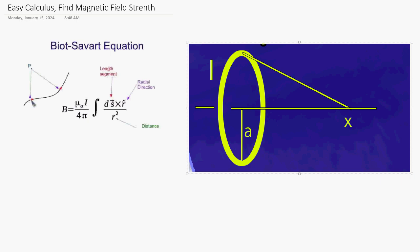Hello everybody, we are back to integration of vector fields. Today the question is, when you have a current loop here, assuming current going this direction, then what kind of magnetic field strength at point x from the center of the loop? This loop size is a.